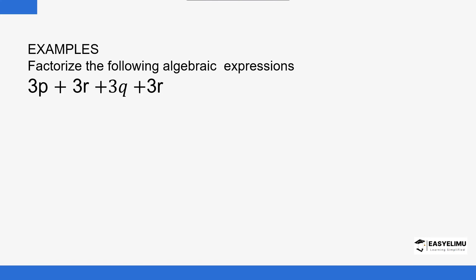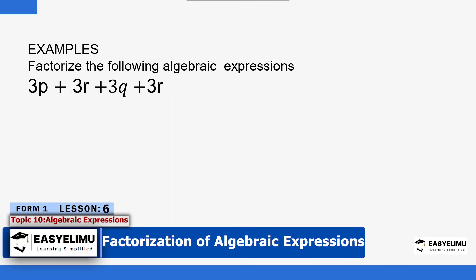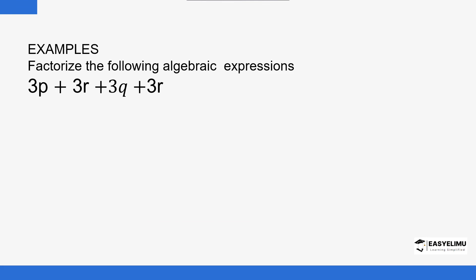Previously we talked about removal of brackets — expanding and simplifying. Now we want to see how we reintroduce the brackets. Factorization is all about reintroducing the brackets in an algebraic expression. For example, here we have 3p plus 3r plus 3q plus 3r — how do you factorize and introduce the brackets? That is what we want to do, and this is our first example.